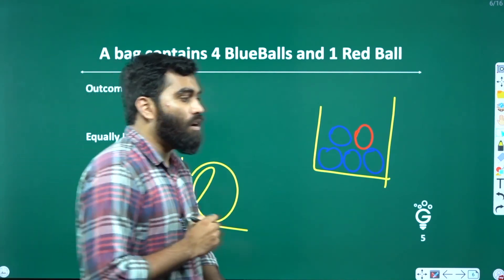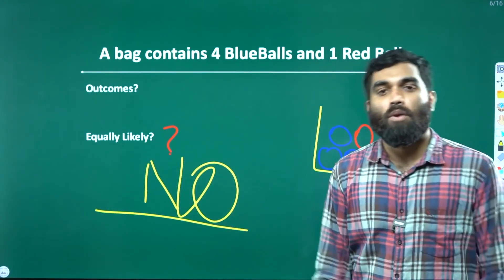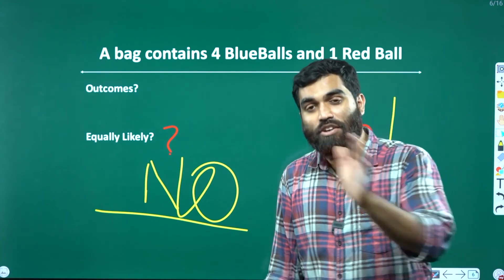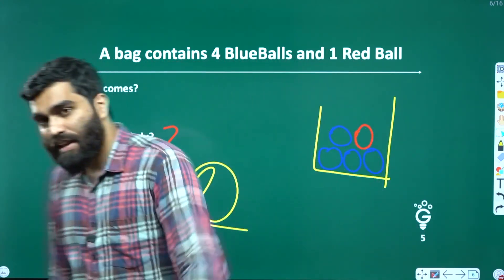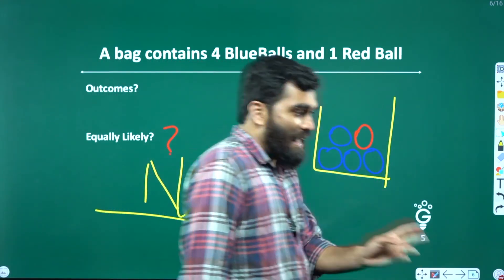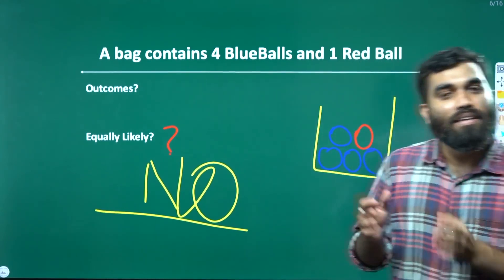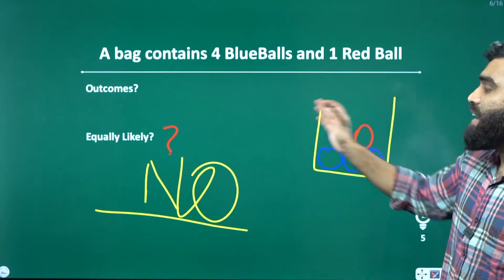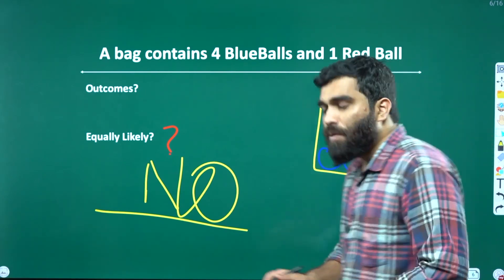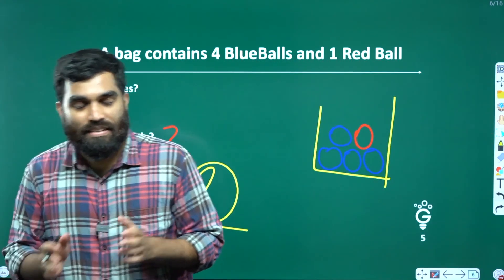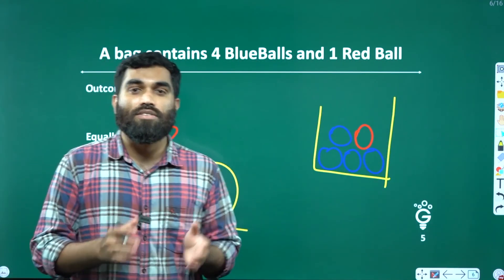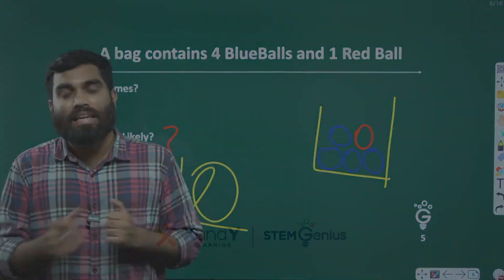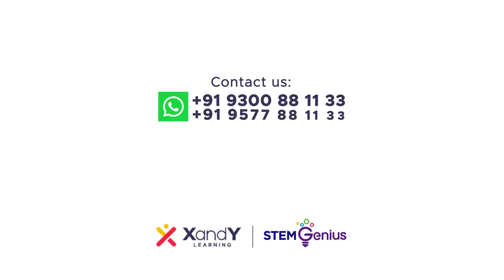If you take a coin toss, you have equal probability of head and tails. If you take a dice, there is equal probability for each face. But in the bag example, the events are not equally likely. I hope you are clear about what it means for the events of a trial to be equally likely.